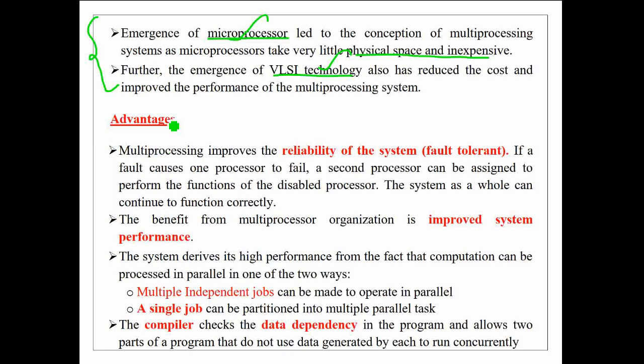Now let's discuss the major benefits from multiprocessing systems. One very important advantage of a multiprocessing system is to achieve reliability of the system, i.e. fault tolerance. For example, if a fault causes one processor to fail, a second processor in the multiprocessing system can be assigned to perform the functions of the disabled processor. So the system as a whole can continue to function despite the failure of a particular processor. Thus, reliability is one of the important advantages of multiprocessing systems.